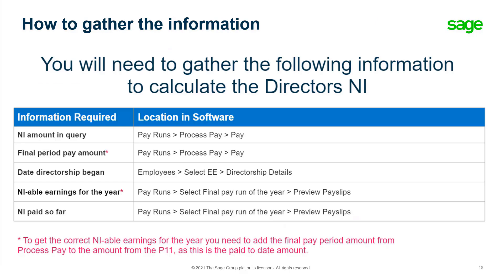In order to calculate the director's national insurance, you will need to gather the following information. This table shows what is needed and where to find it in Sage Business Cloud Payroll.